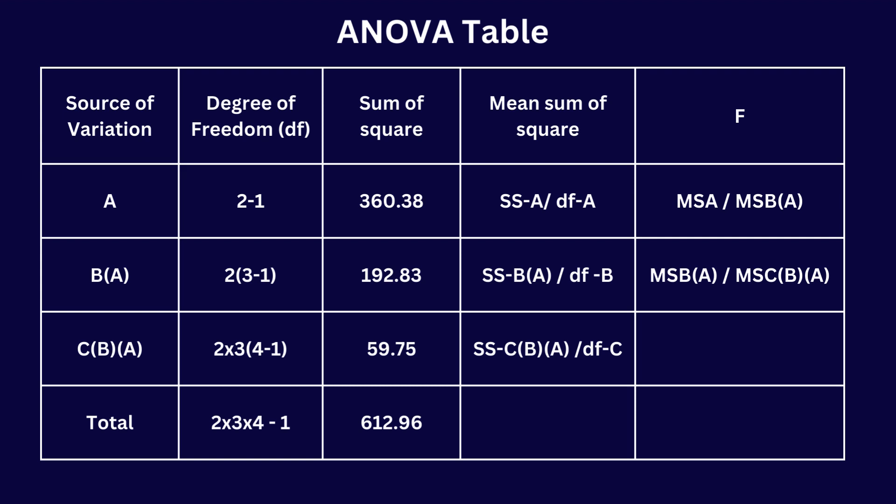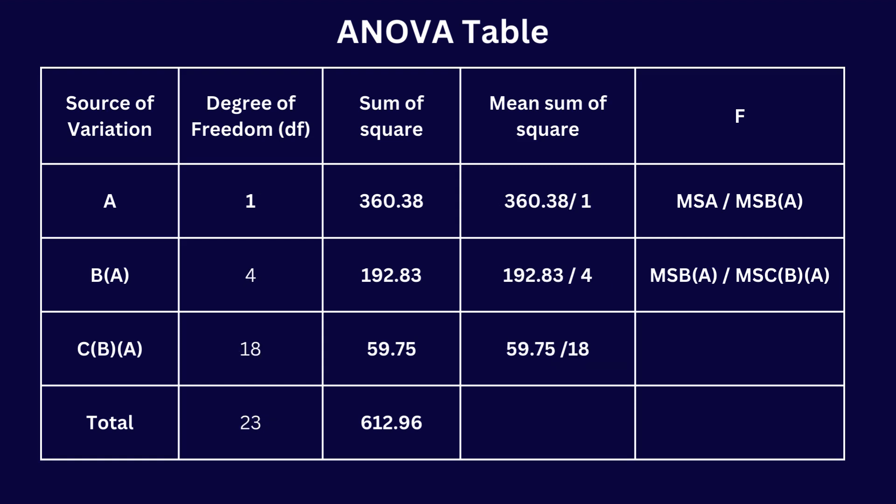After calculating the degrees of freedom, we can find the mean sum of squares. The mean sum of squares for A equals sum of squares of A divided by degree of freedom of A. Mean sum of squares for BA equals sum of squares of BA divided by degree of freedom of BA. Mean sum of squares for CBA equals sum of squares of CBA divided by degree of freedom of CBA. The F value for A equals mean sum of squares of A divided by mean sum of squares of BA.